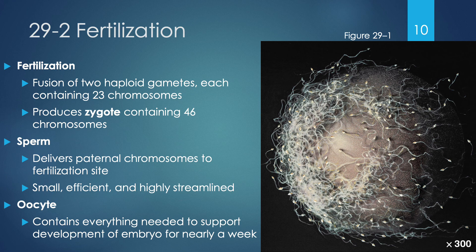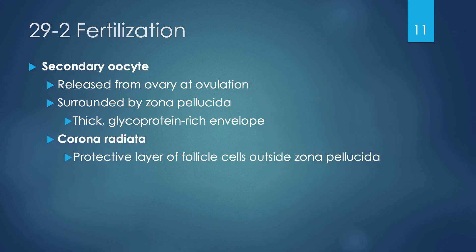The secondary oocyte is the true gamete of the female reproductive system, released by the ovary at ovulation. At this time it's surrounded by the zona pellucida — a thick glycoprotein-rich envelope that protects the oocyte. There's also an area called the corona radiata, a protective layer of follicular cells just outside the zona pellucida. The corona radiata has an important role in the acrosome reaction as the sperm enters the secondary oocyte.